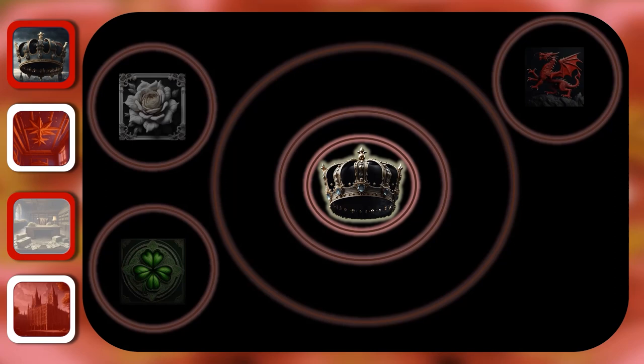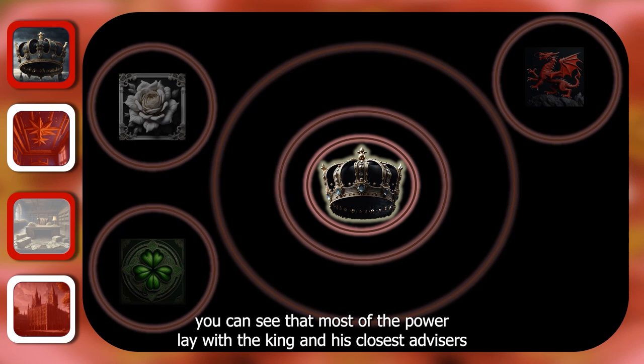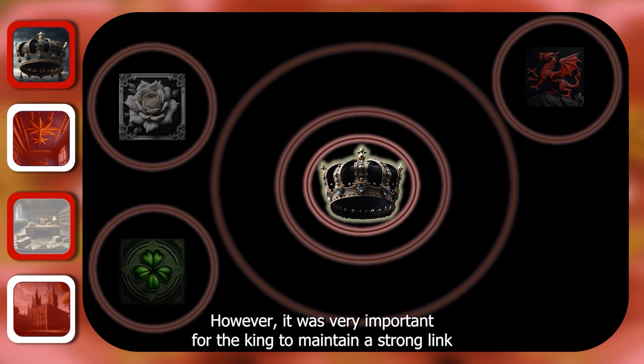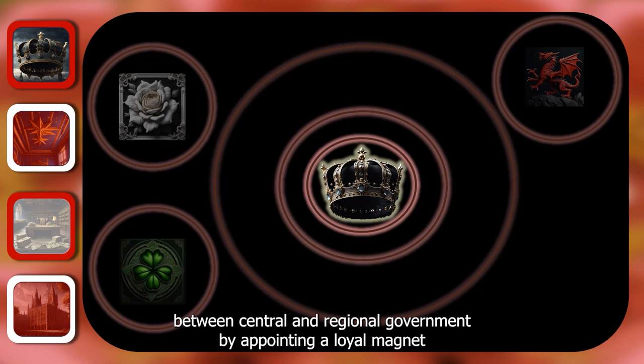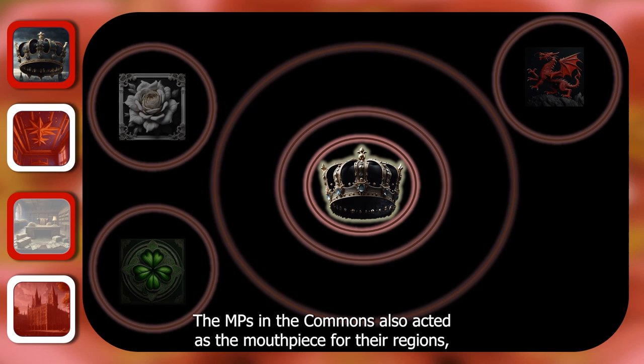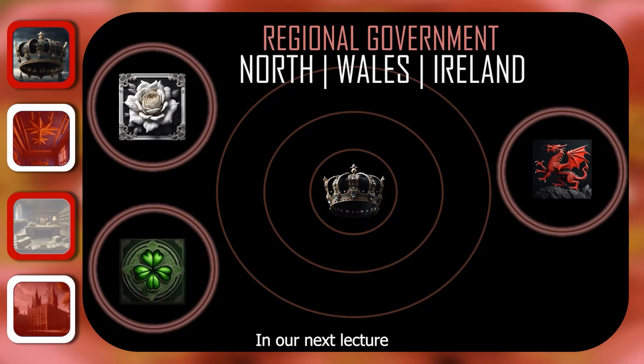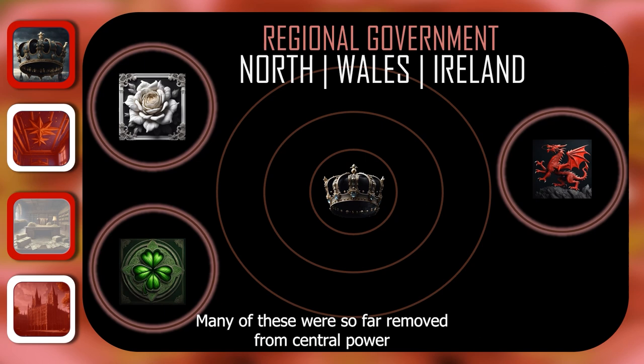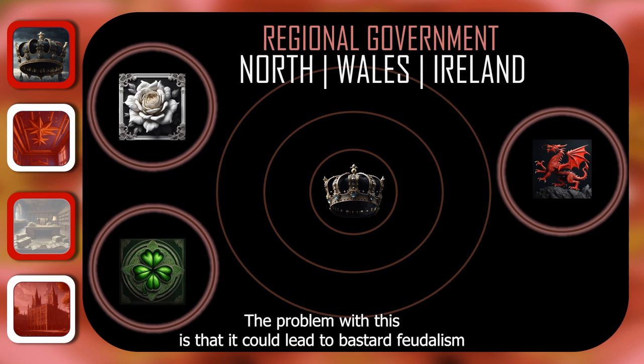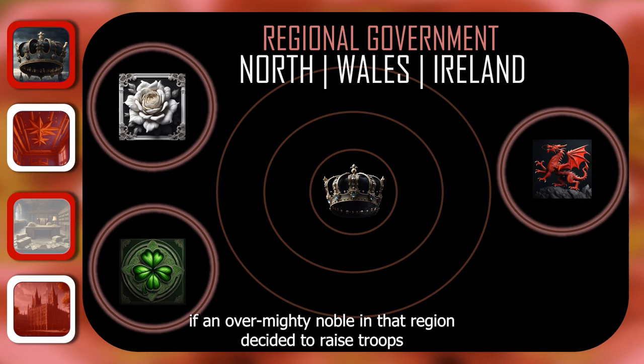If we scale this diagram, you can see that most of the power lay with the King and his closest advisors, with some power going to those who run the offshoot courts. However, it was very important for the King to maintain a strong link between central and regional government by appointing a loyal magnate to govern each region. The MPs in the Commons also acted as the mouthpiece for their regions, and many of the petitions discussed in Parliament related to local issues. Many regions were so far removed from central power in London that some had become semi-autonomous, which could lead to bastard feudalism if an overmighty noble decided to raise troops against the King.